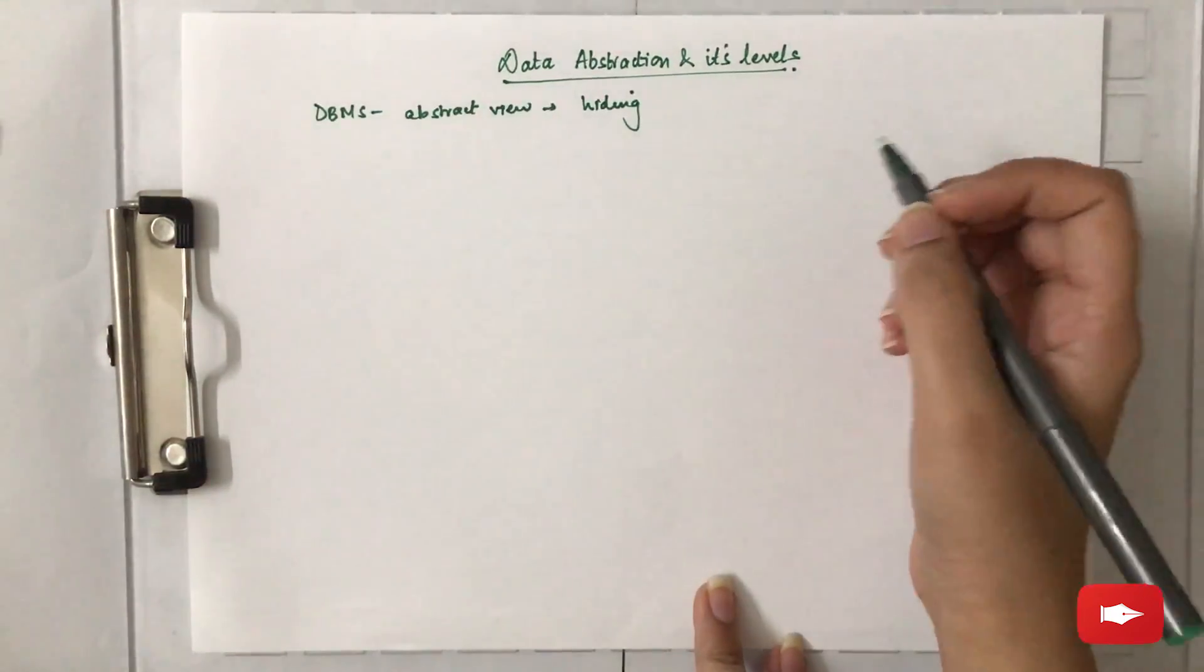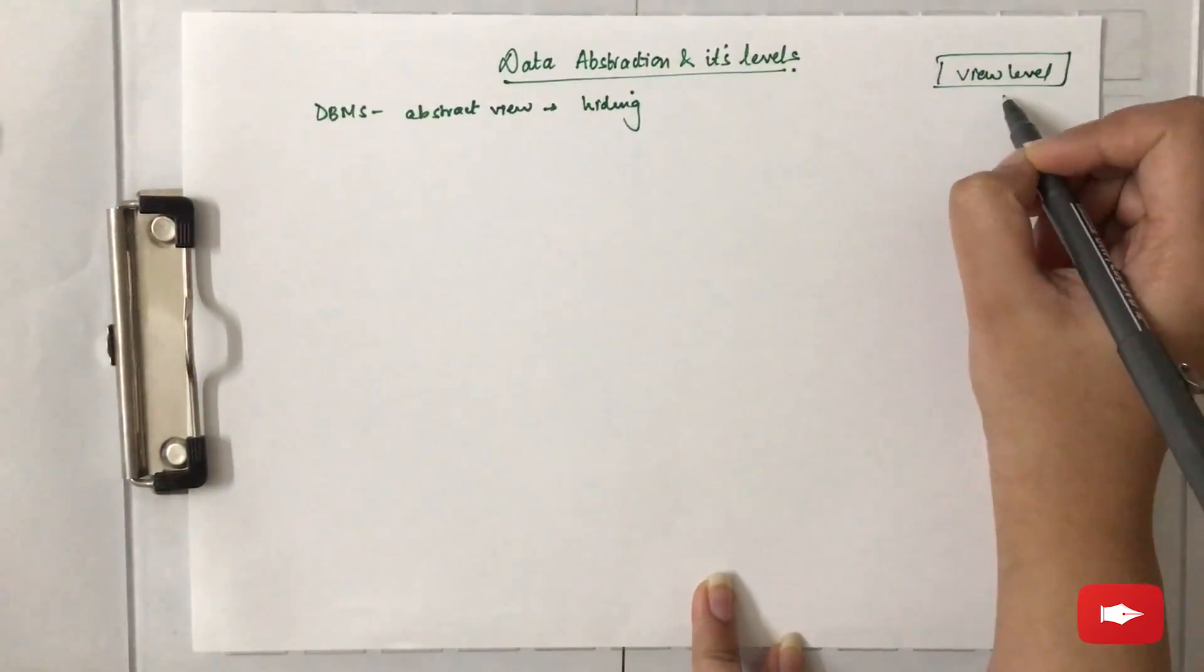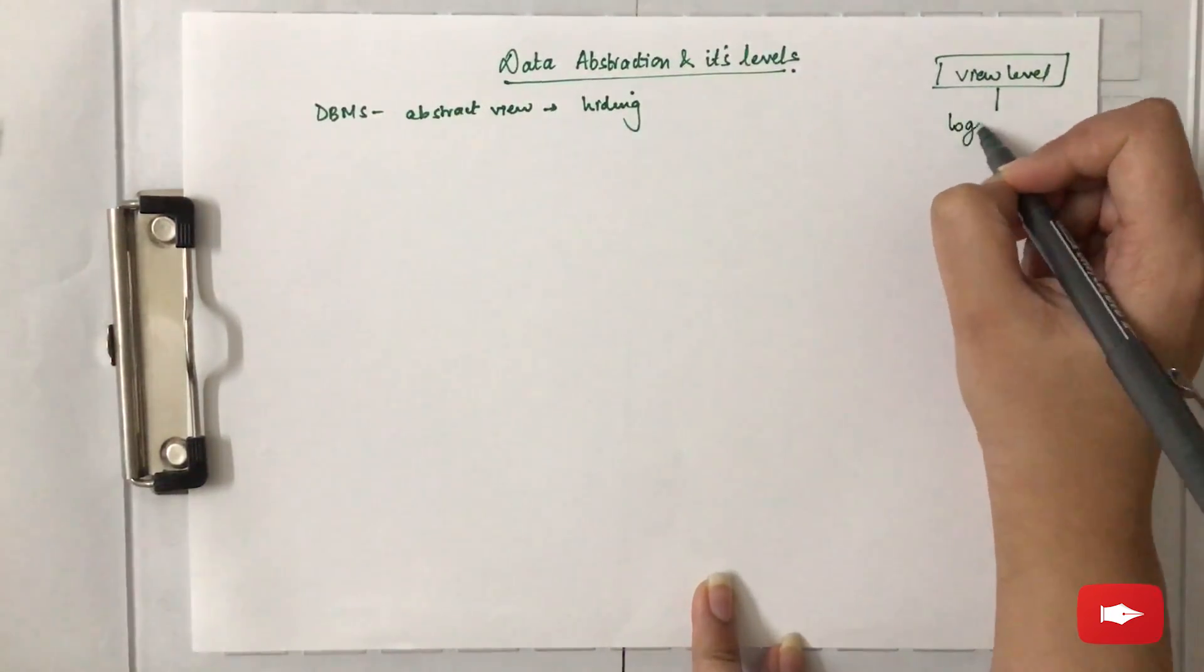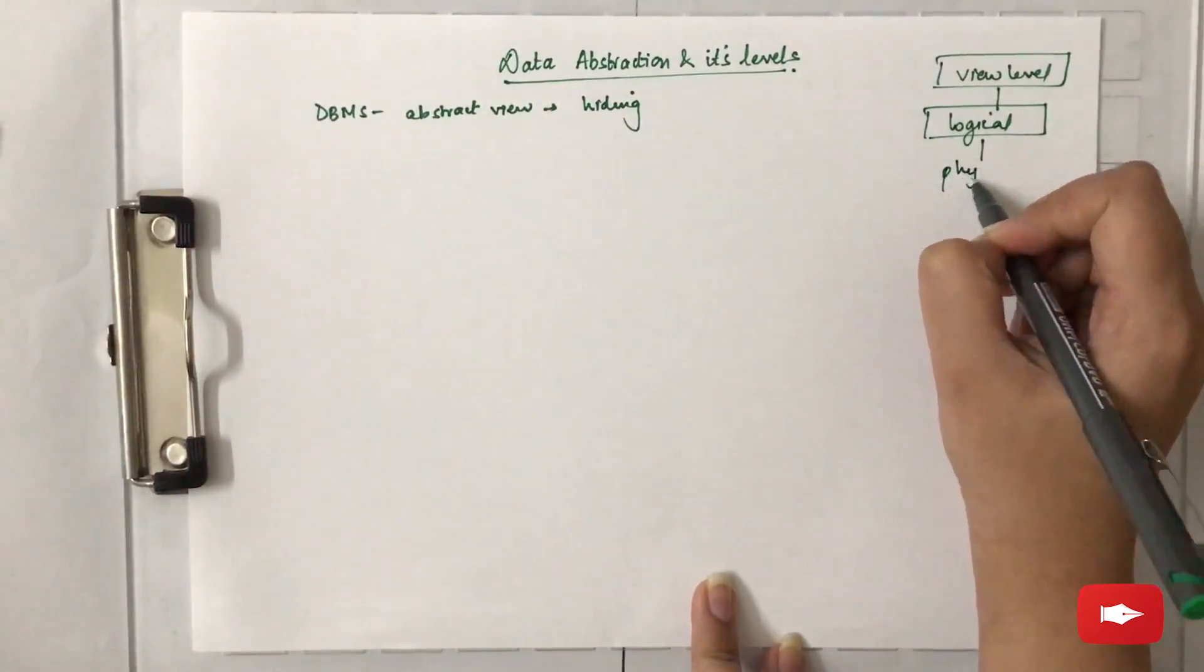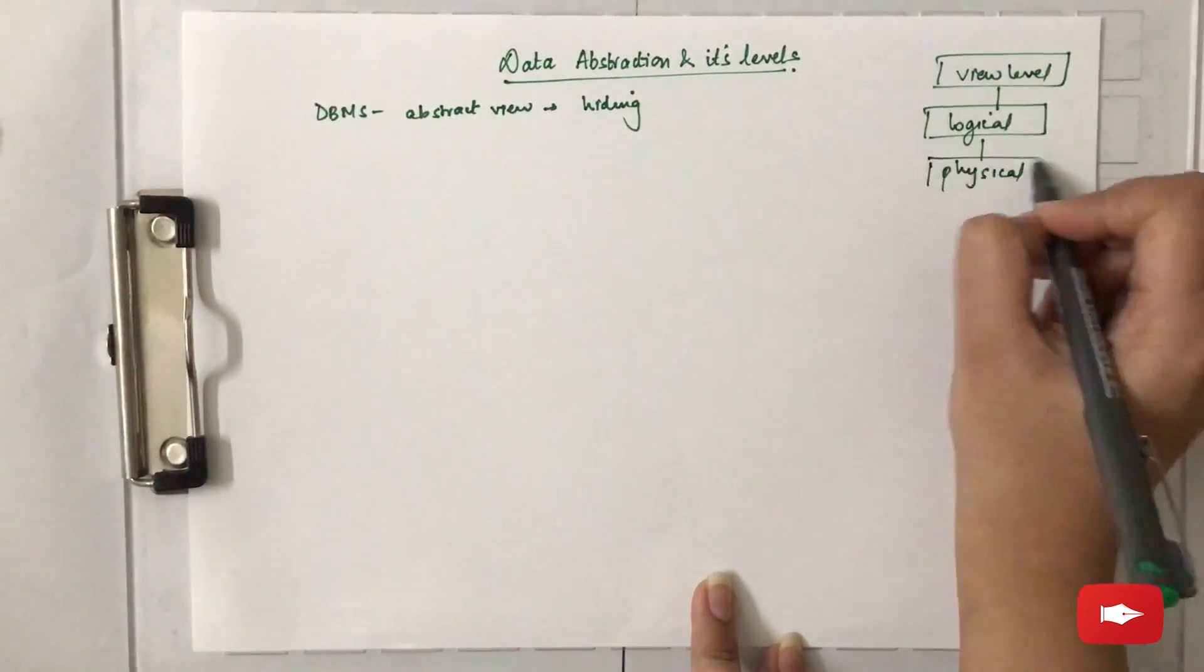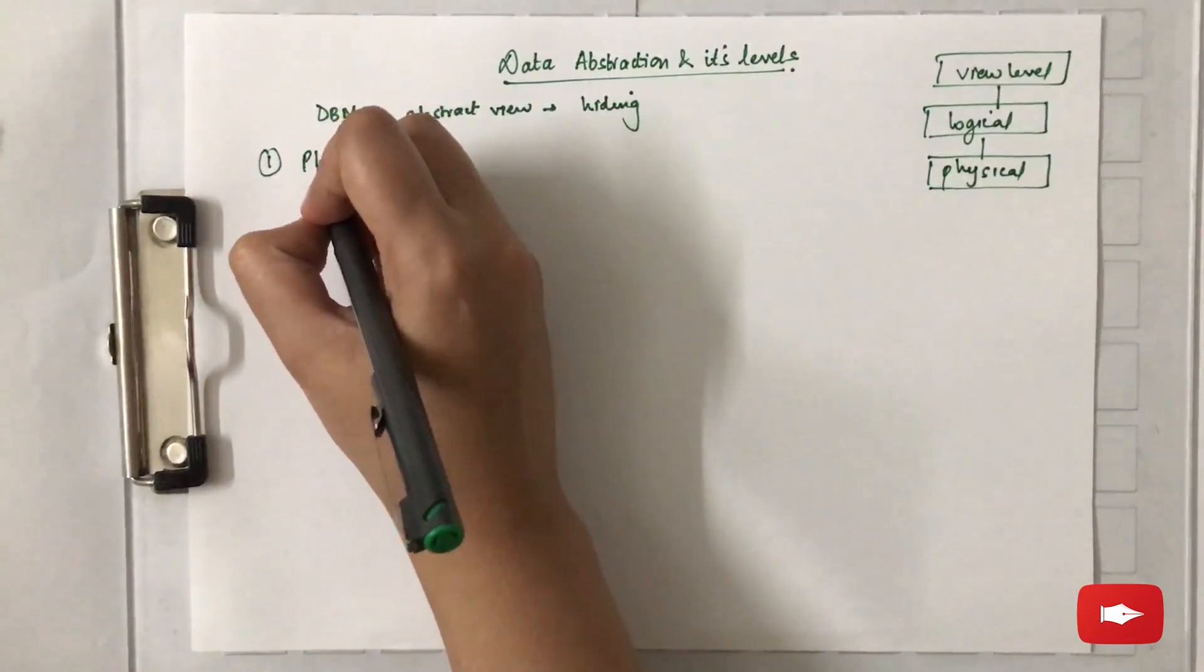Now there are three different levels of data abstraction: view level, logical level, and the physical level. Let's talk about the physical level first.